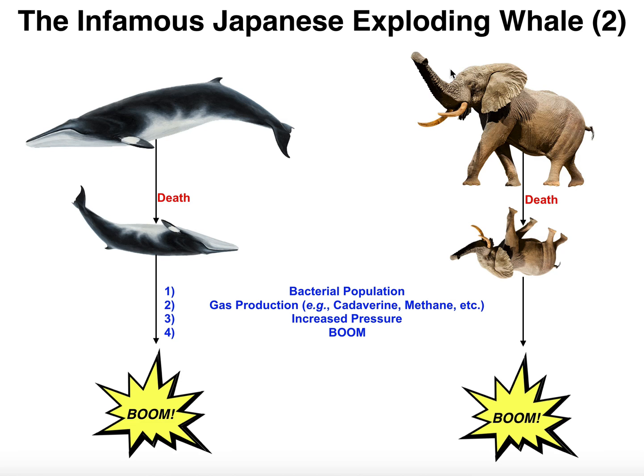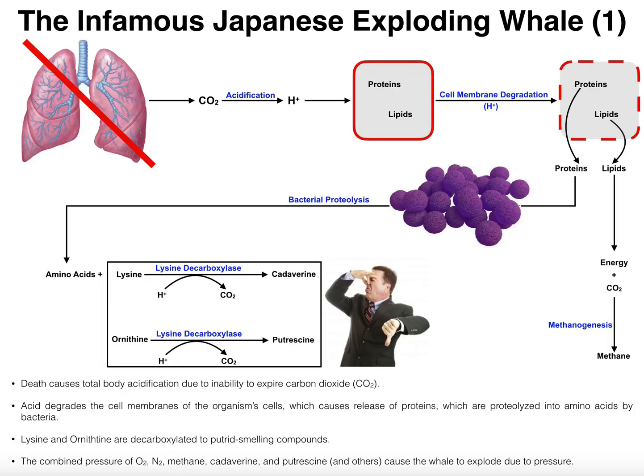That is the mechanism behind the infamous Japanese exploding whale. After death, you have bacterial overpopulation, subsequent gas production, and then enough pressure causes the organism to explode. Hopefully you enjoyed this video and got some interesting information out of it. Please make sure to like this video and subscribe to my channel for future videos and notifications. Thank you very much.